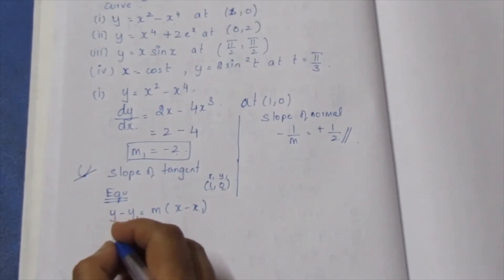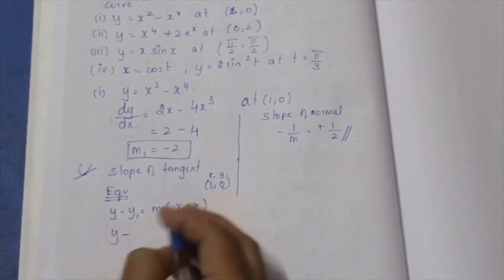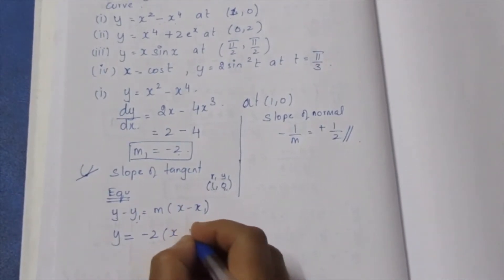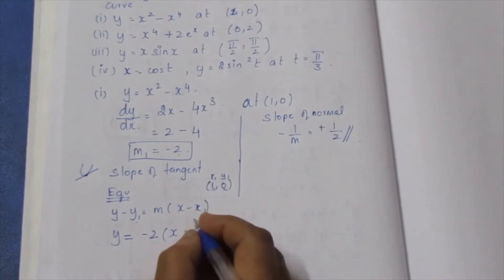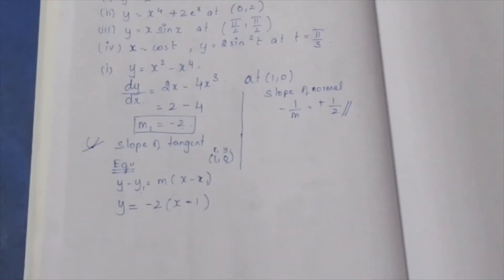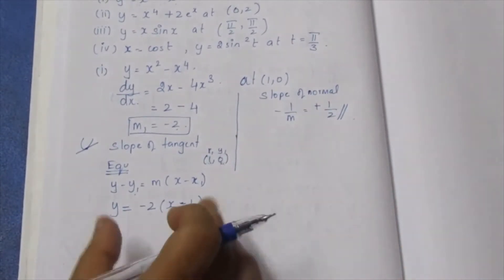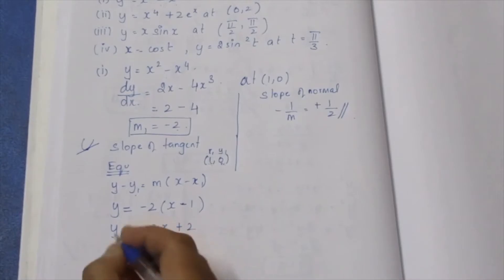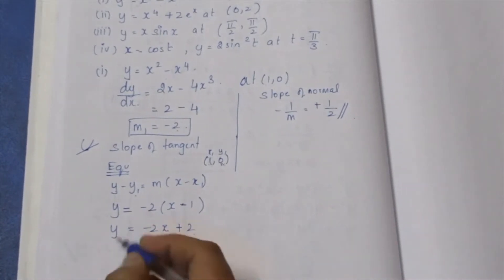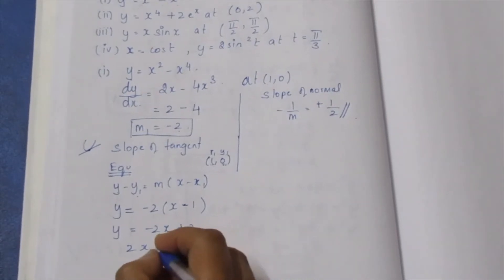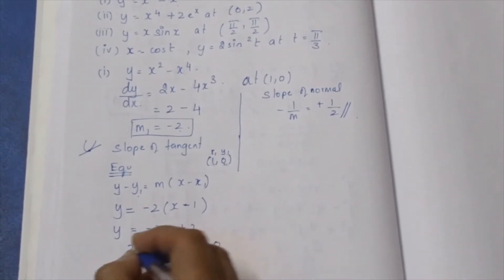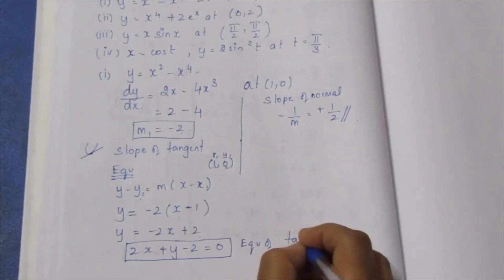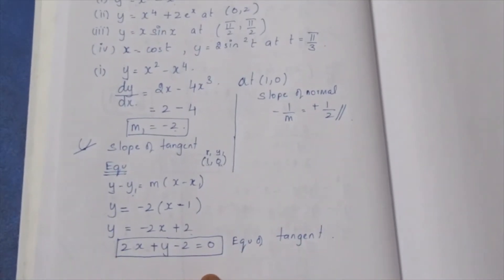Substituting: y1 equals 0, x1 equals 1. We substitute these values into the tangent equation to get the equation of the tangent line. The normal is perpendicular to the tangent.